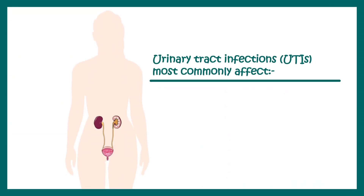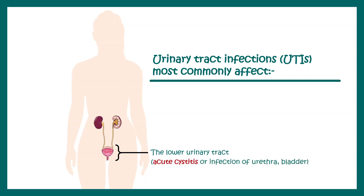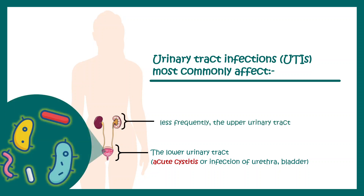Urinary tract infection most commonly affects the lower part of the urinary tract — the bladder and urethra. Initially it presents as urethritis when the urethra is inflamed, then cystitis when the bladder is inflamed. The infection can eventually spread up to the kidney, known as upper urinary tract infection. This is less frequent but is termed acute pyelonephritis.